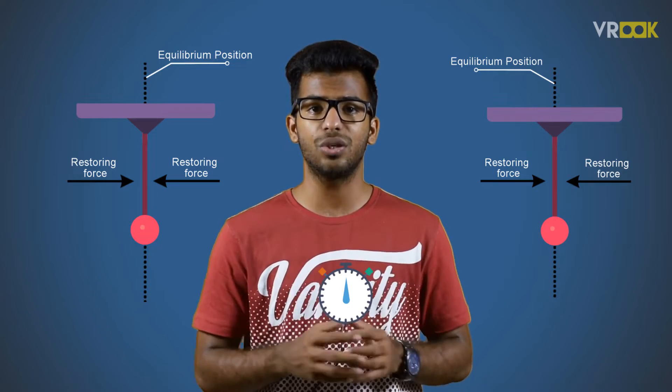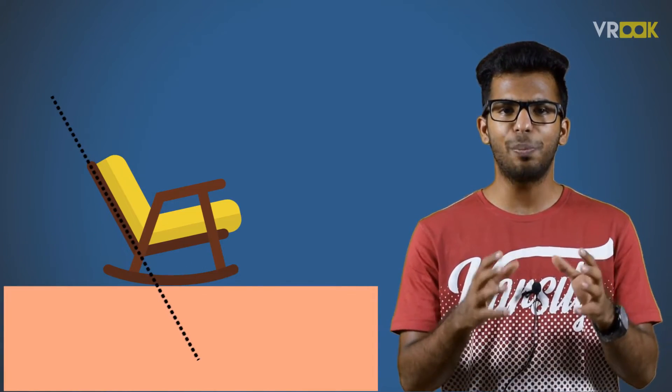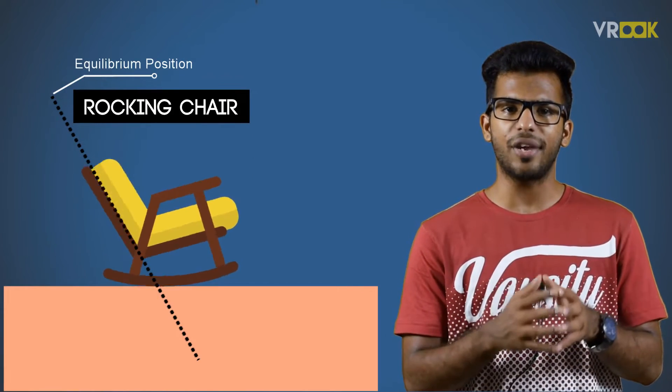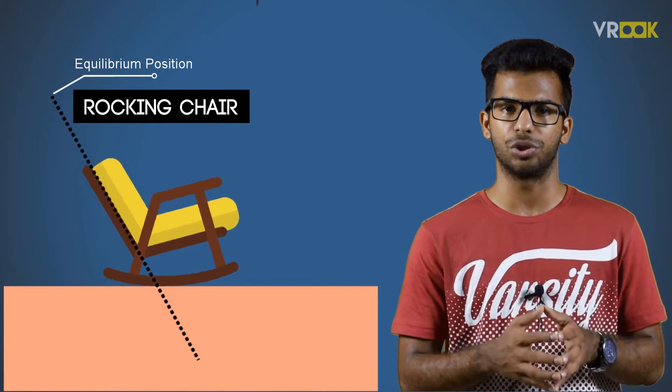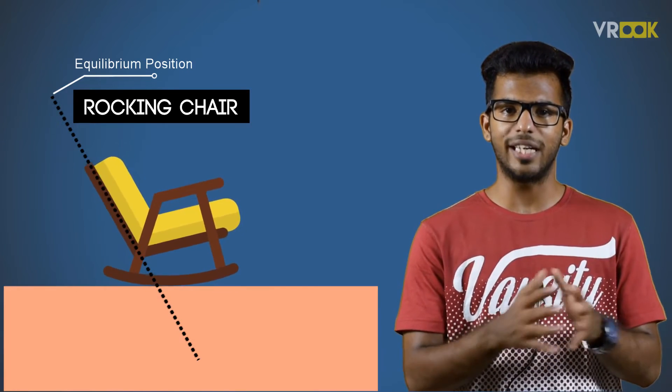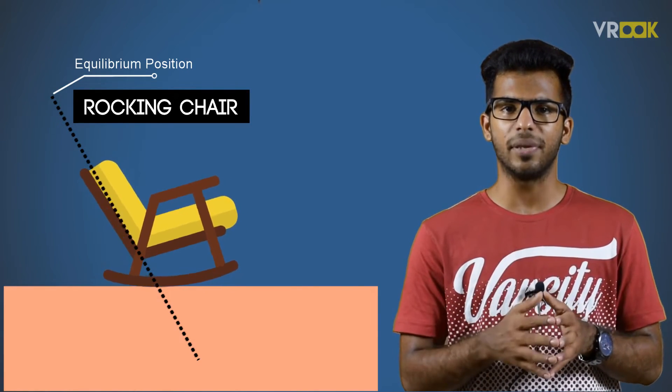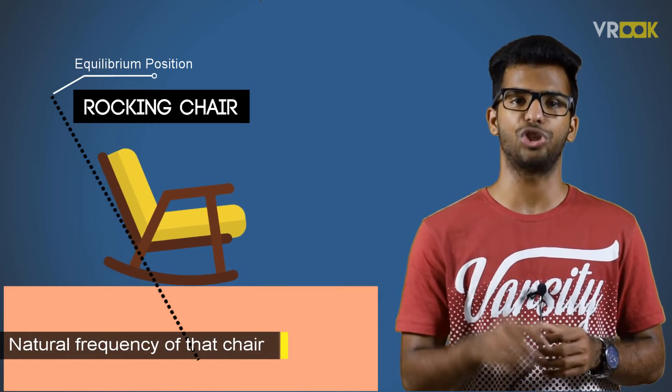Another daily life example would be a rocking chair. When you pull it back, it tries to get back to the equilibrium position. In the process, it oscillates. This happens at the natural frequency of that chair.